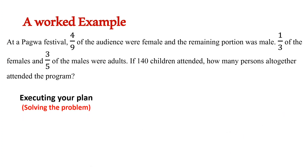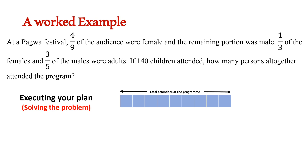Now let us execute the plan — here is where you actually solve the problem. The question said that four-ninths of the audience were female. So a bar cut into nine equal portions represents the total attendees at the festival. Four of the nine portions represent the females — let's put this portion in red. This means the remaining portion in blue represents the males.